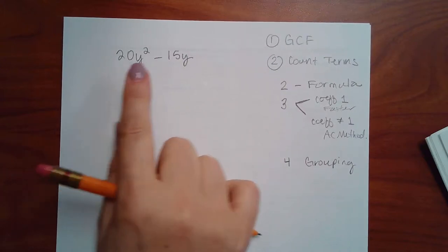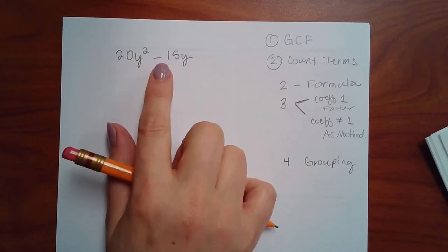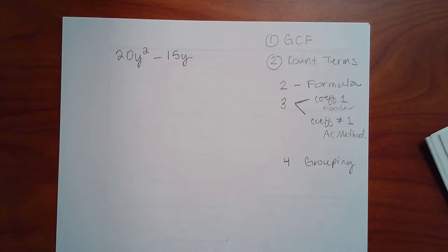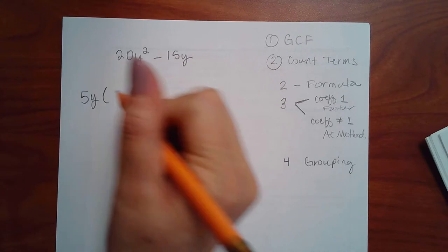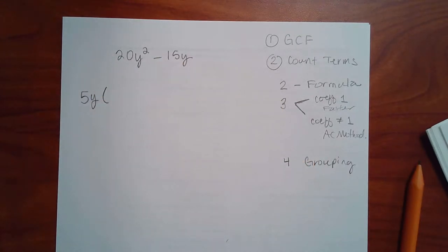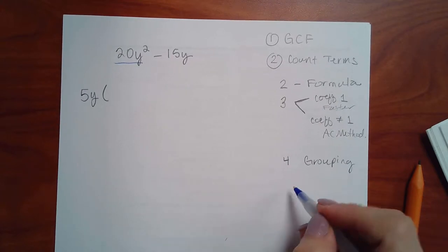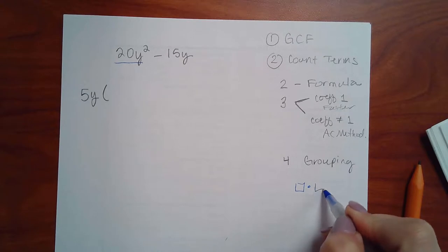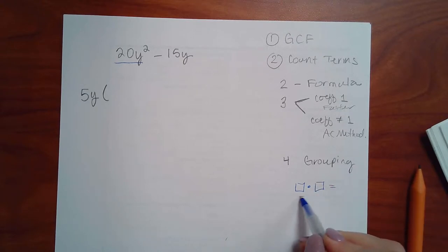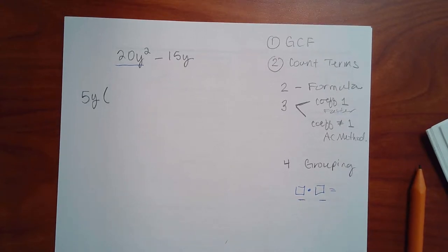So for this one, factoring out the GCF, what number can both 20 and 15 both be divided by? By 5. And then how many variables can I take from both terms? Just one.